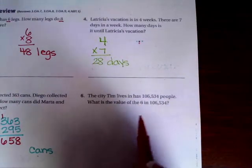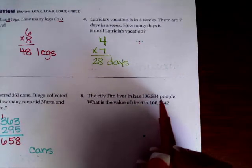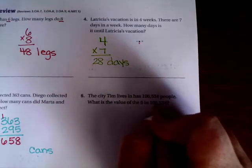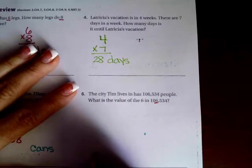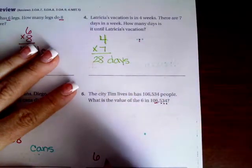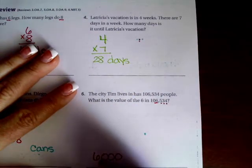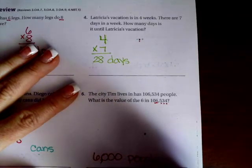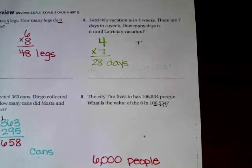The city Tim lives in has one hundred and six thousand five hundred and thirty-four people. What is the value of the six? So we're going to drop the six down, and then there are one, two, three numbers after it. Those become zeros. Six thousand people.